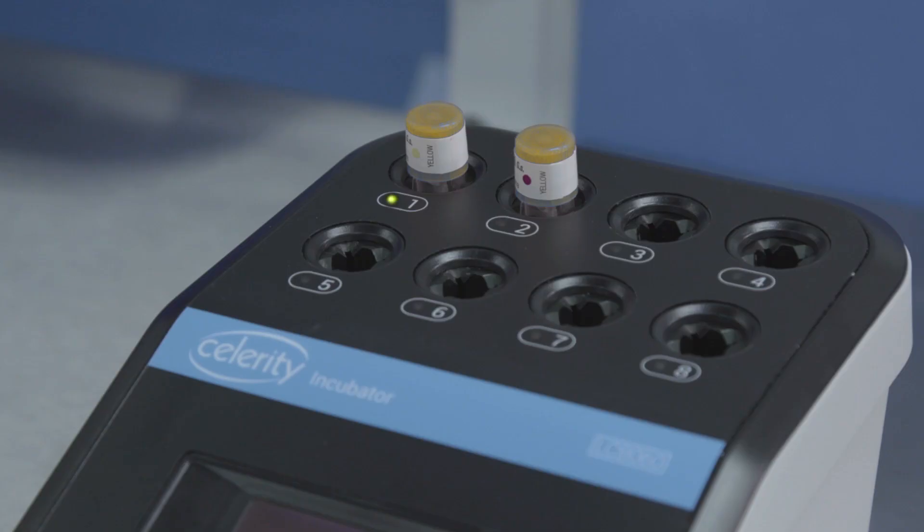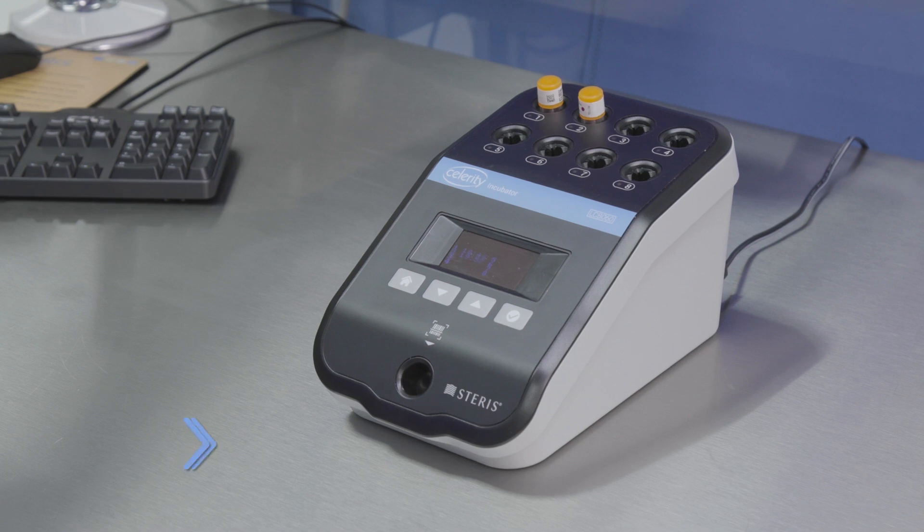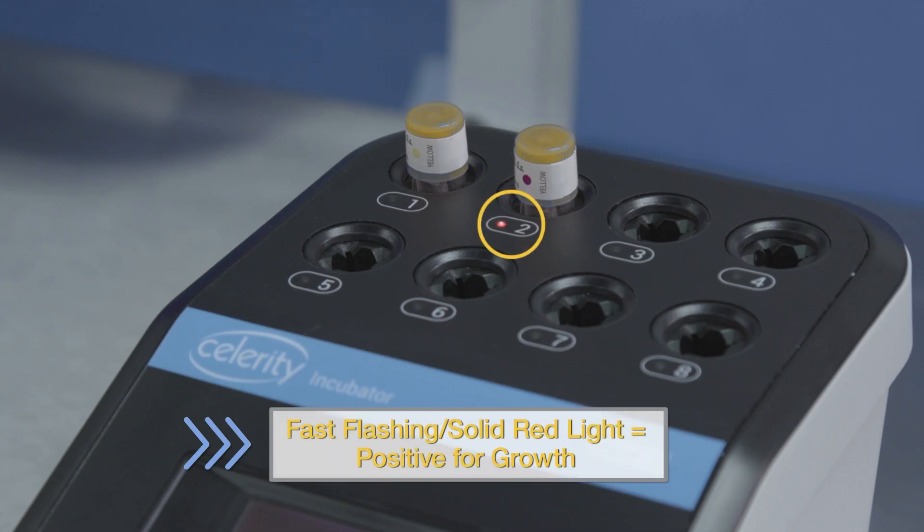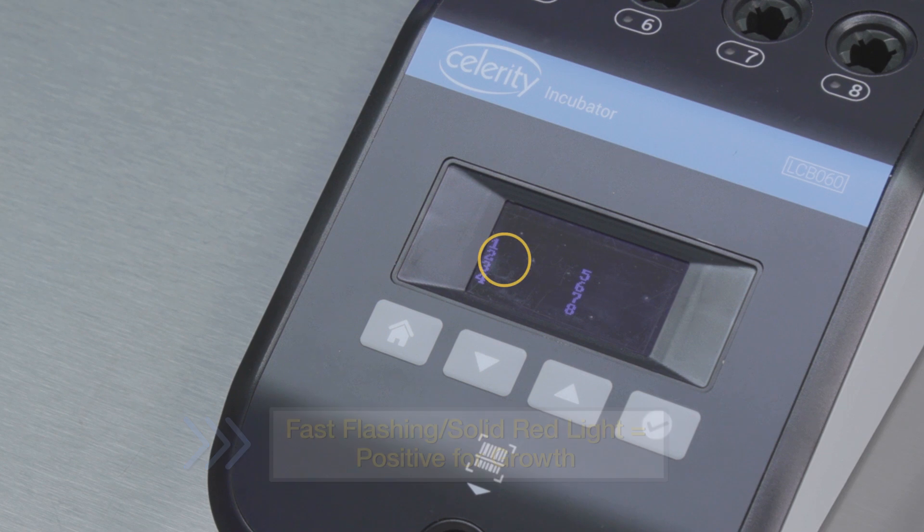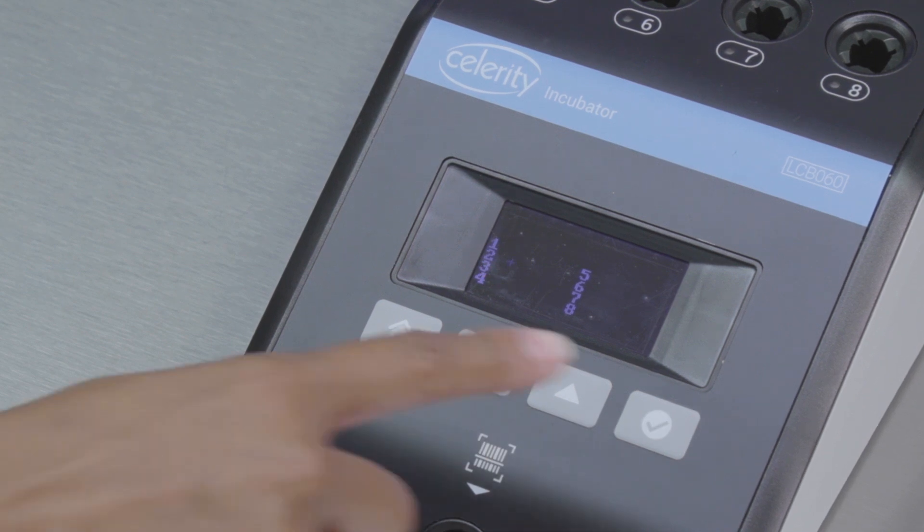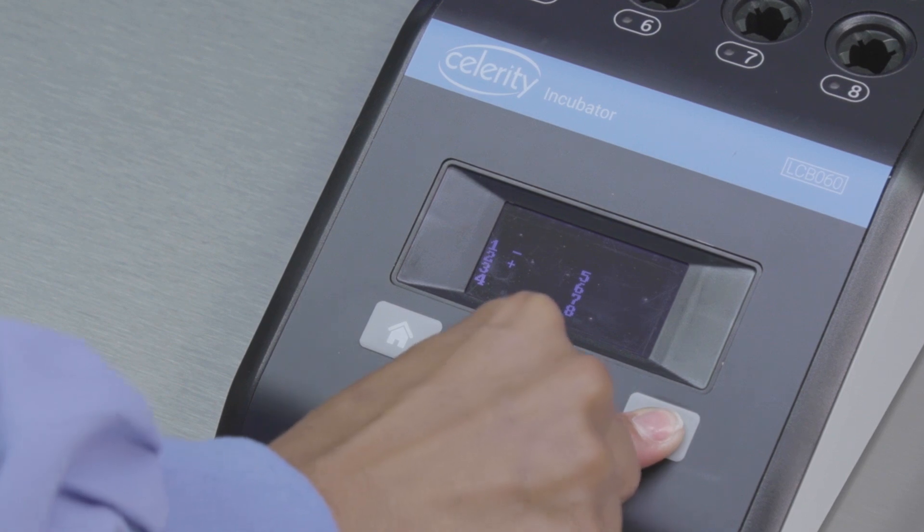The BI is positive for growth when the incubator demonstrates a fast flashing red light, as well as an audible alarm and a plus sign on the screen next to the corresponding well number. Acknowledging the result will silence the alarm and the LED will turn solid red.